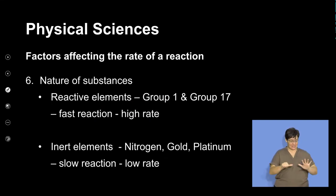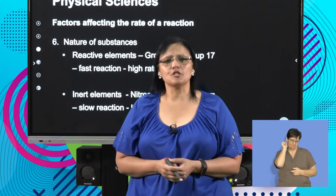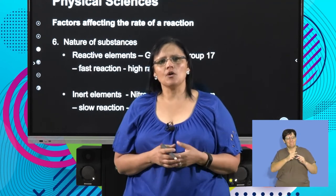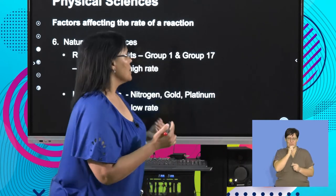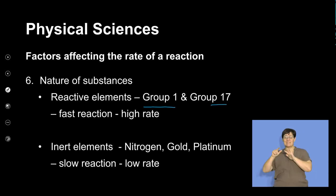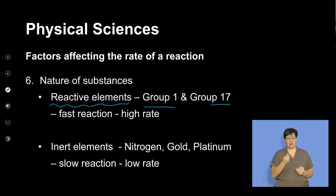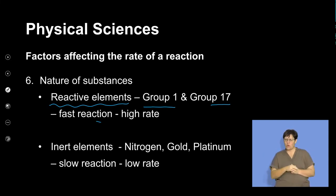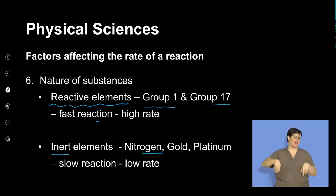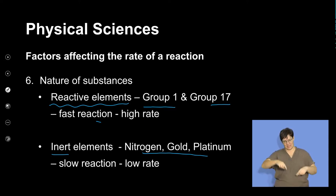The sixth factor is the nature or type of reactants used. Some group 1 and group 17 elements are very reactive when they react — all of them are highly reactive elements that make for fast, high-rate reactions. But inert elements like nitrogen, gold, and platinum don't really want to react, so when they are in a reaction, they have slow reactions with a low rate, meaning it takes long times for these reactions to take place.